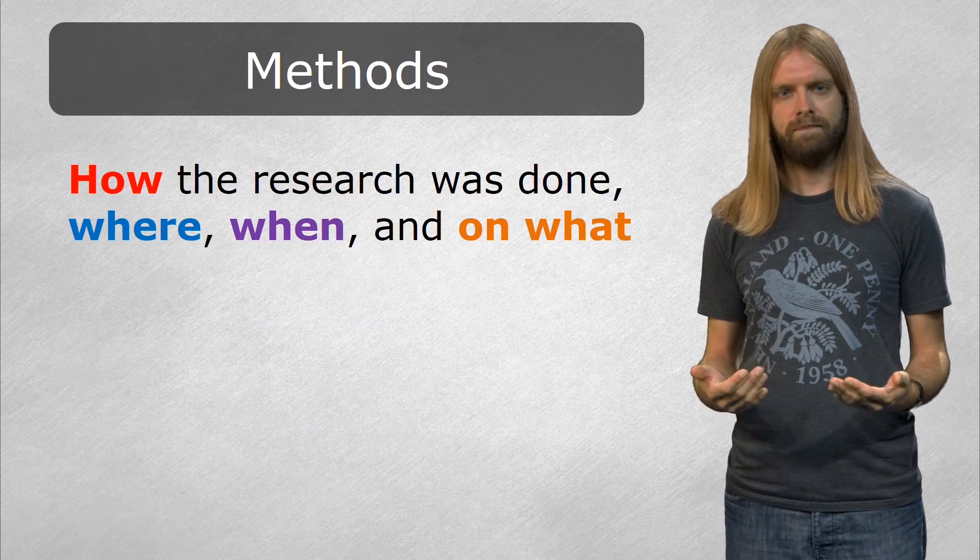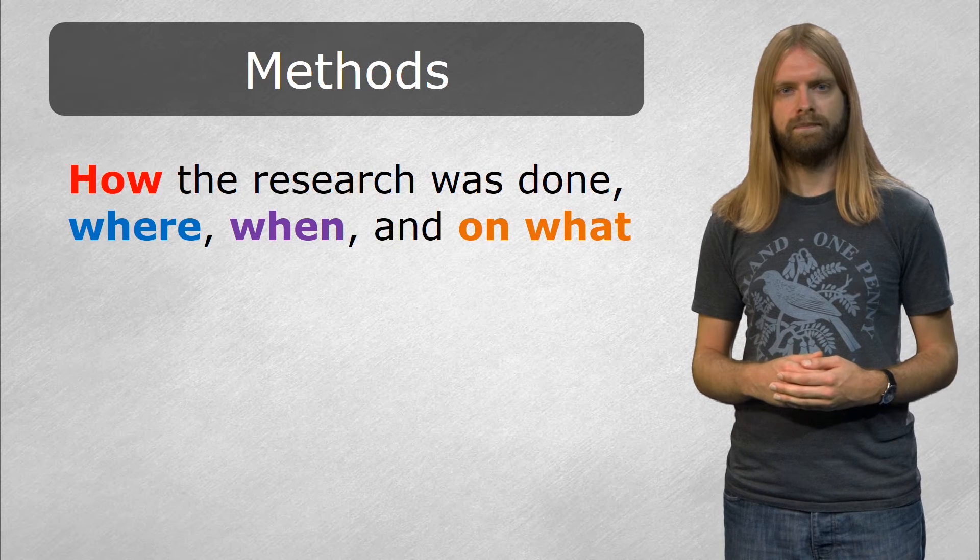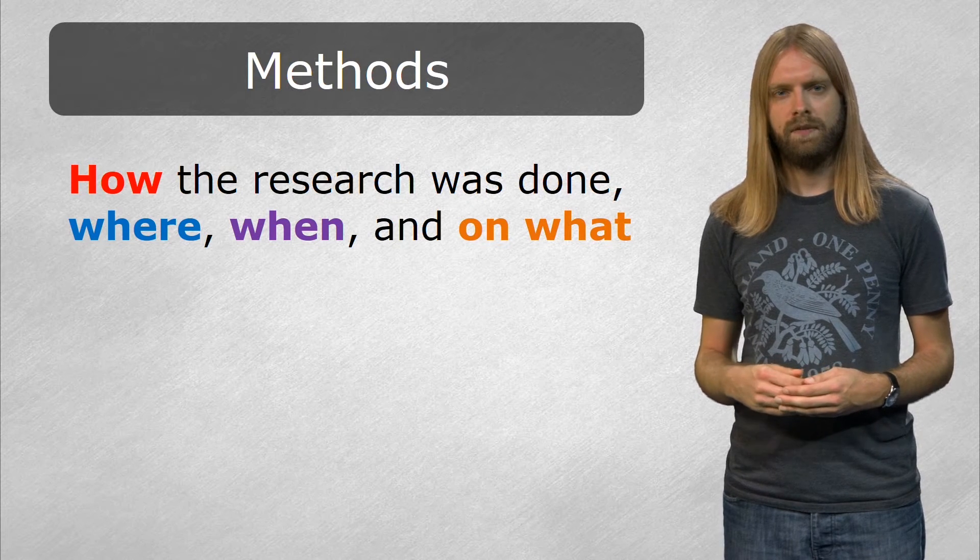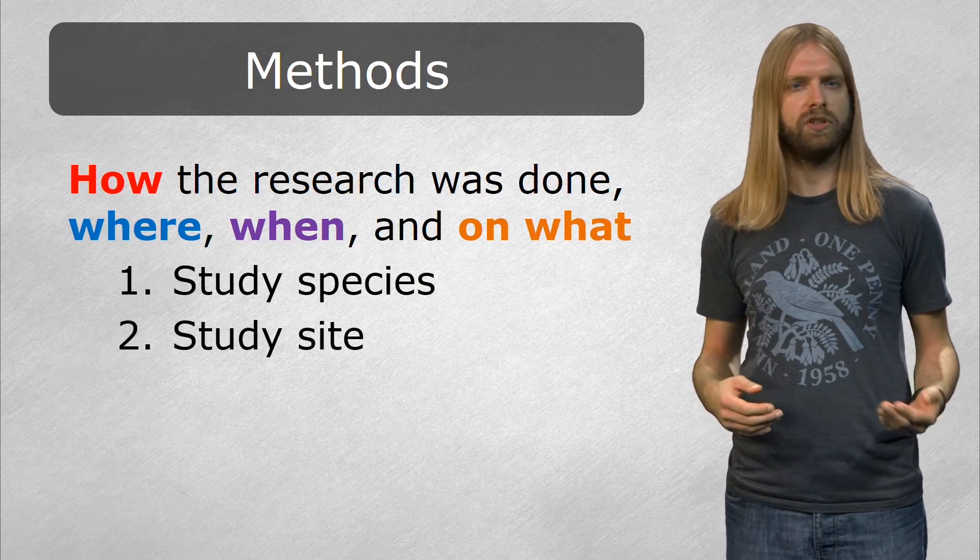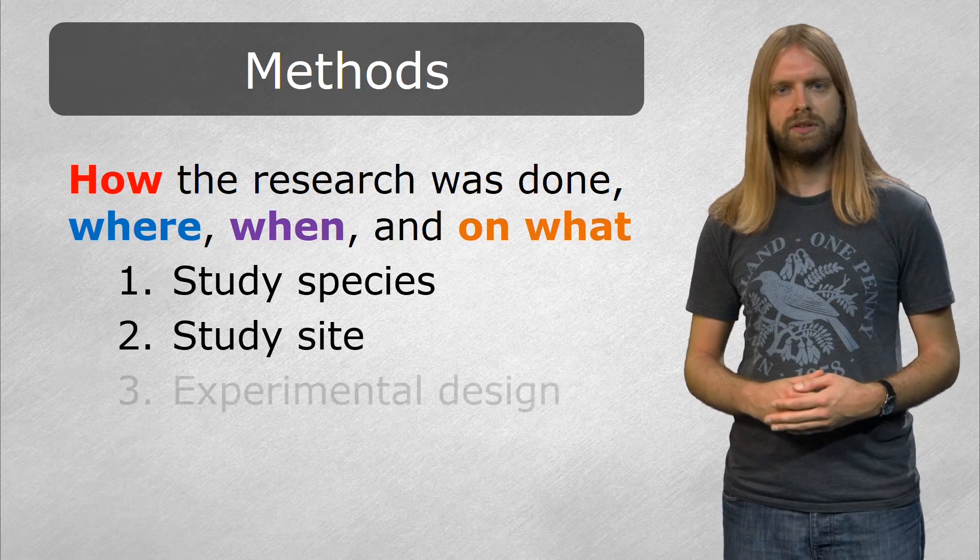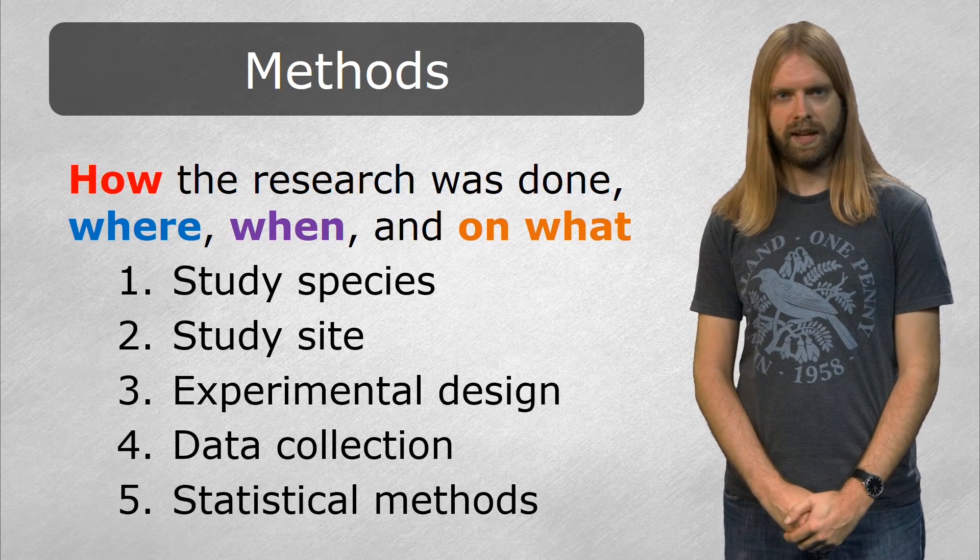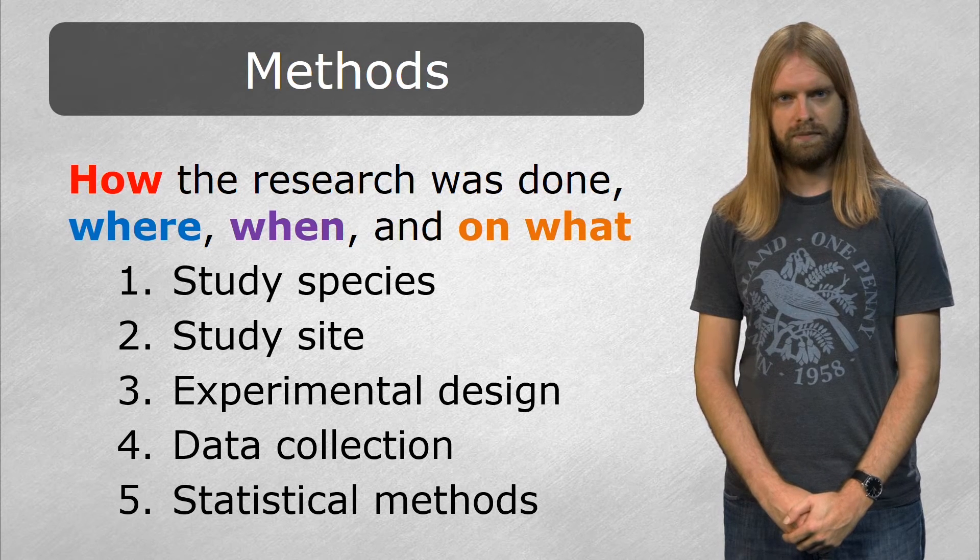The methods section describes how the research was done. For animal behavior, this means the study species, research site, and ethical considerations, as well as the experimental design, how the data were collected, and the statistical methods.